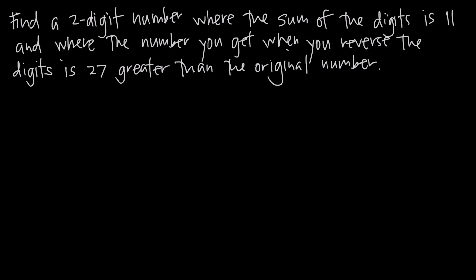In this video we're talking about number word problems, and in this particular problem we've been asked to find a two-digit number, and this is going to be a whole number, where the sum of the digits in this number is 11, and where the number you get when you reverse the digits is 27 greater than the original number.